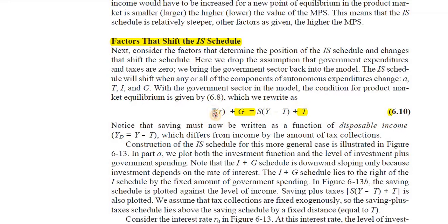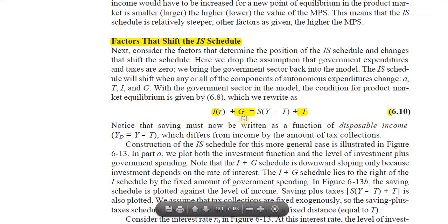In the case of investment I, we write R as well, meaning investment demand is dependent upon R — the rate of interest. Higher the rate of interest, lower would be the investment demand. In the case of government expenditure, it is largely autonomous — government spending does not depend upon the rate of interest in the economy; it is largely neutral to such considerations.